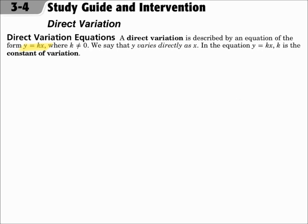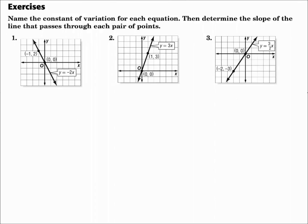There are different types of questions you will solve with this — some just asking about direct variation, and then some will be graphing. Name the constant of variation for each equation and then determine the slope of the line that passes through each pair of points.